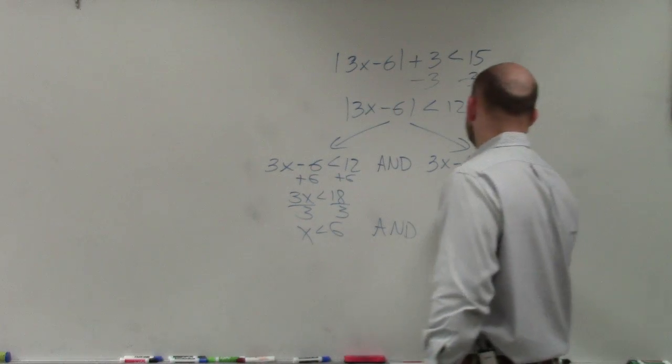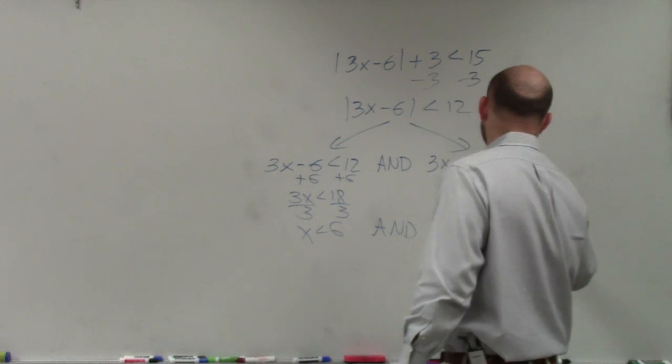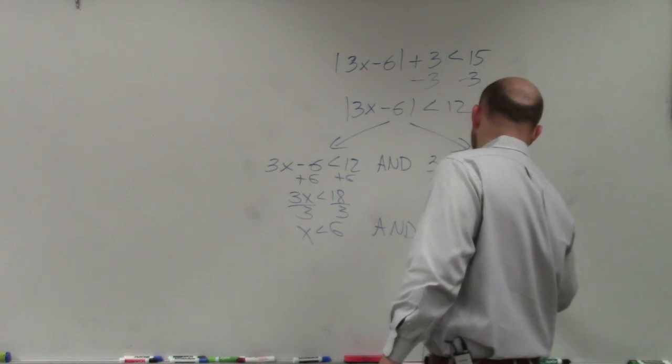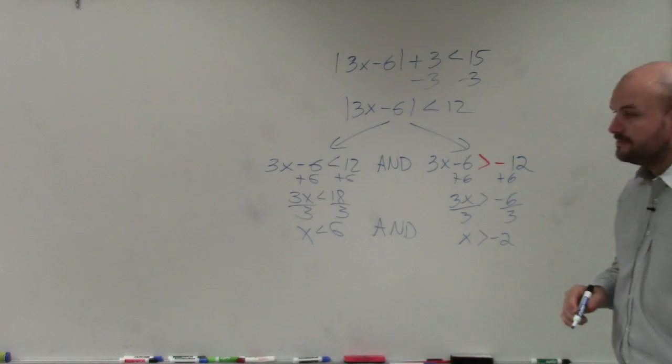And add 6, add 6. 3x > -6. Divide by 3, divide by 3. x > -2. OK?